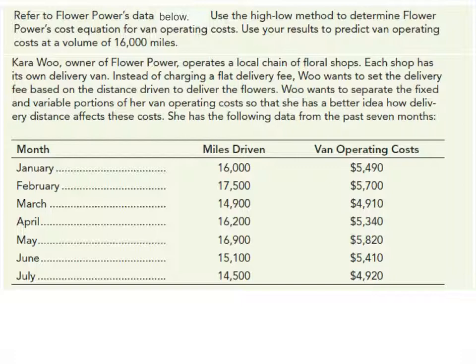So an important part about the high-low method, and it sounds like it, we're going to pick the high and low point. But you have to be very careful that you pick the activity level not the cost. Okay so we're talking about high-low, we want the high activity level and the low activity level. So in looking at this, if we look down at the activity which is miles driven in this case, we see that February is the high and we see that July is the low. So we have the low and the high points.